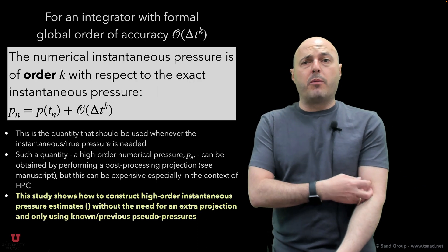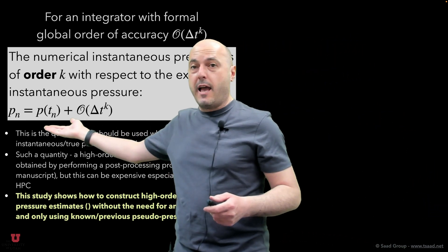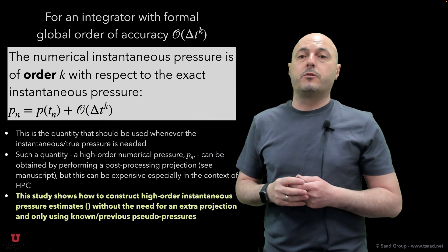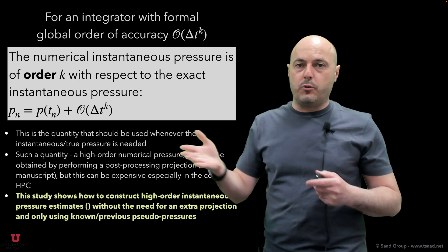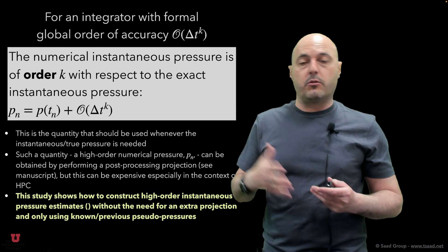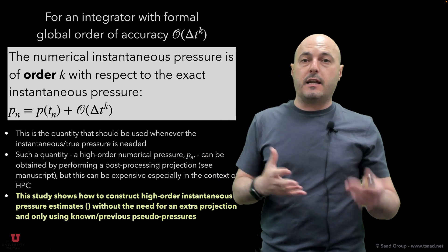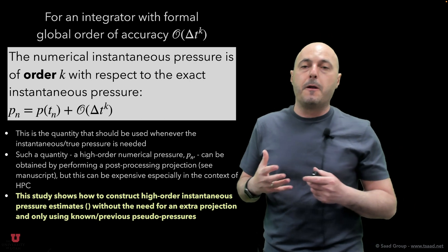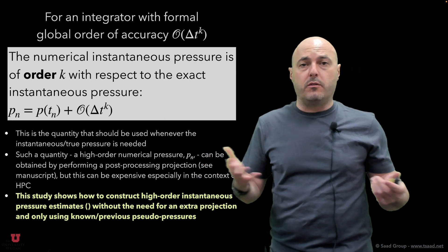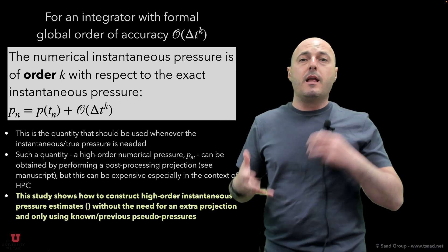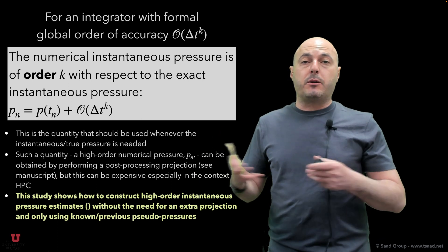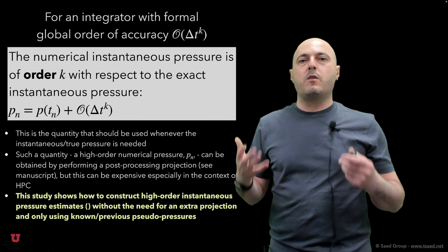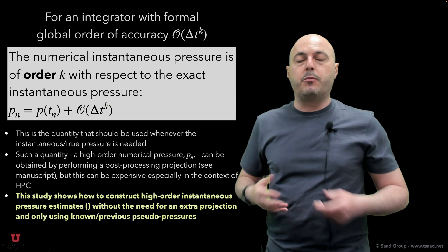Finally, a critical observation is that the numerical instantaneous pressure p_n is of order k with respect to the exact instantaneous pressure. This is the quantity one should use wherever the instantaneous pressure is needed — you should use p sub n instead of phi as a surrogate. However, this quantity can only be obtained with a post-processing projection on u^{n+1}, and for RK2 or RK3 methods, adding one additional projection could be very costly, especially within the context of high-performance computing. Therefore, it is useful to have a way to estimate p sub n without the need for this post-processing projection.